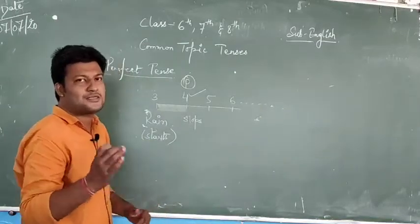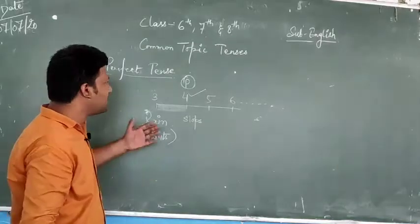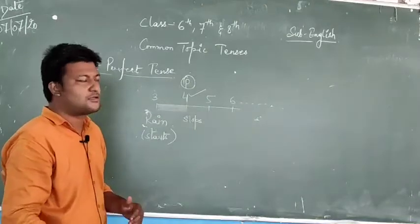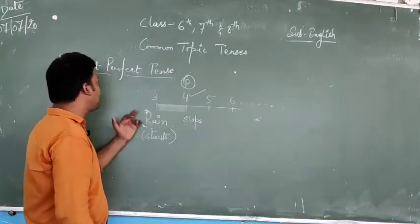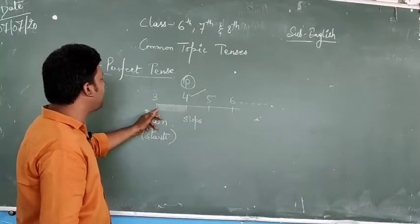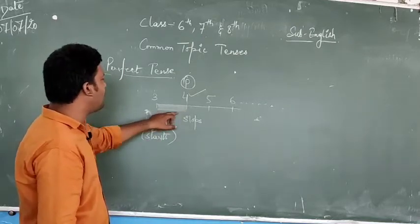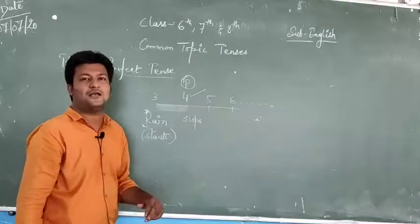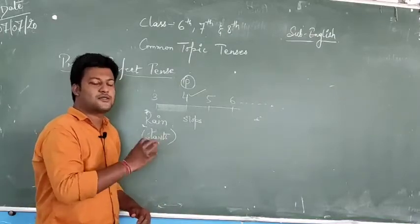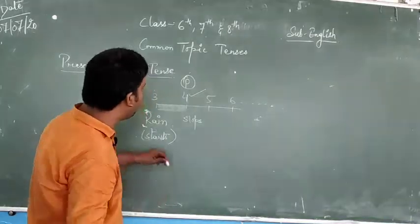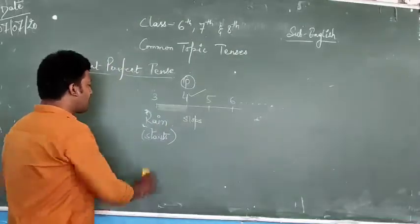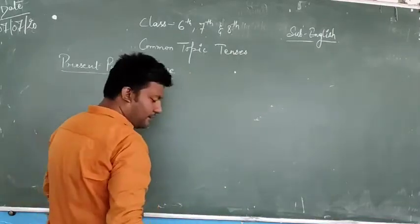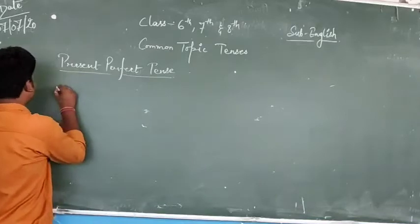What is different about present perfect tense compared to simple and continuous? In simple tense, time duration is not there. In continuous tense, time duration is also not there. But in perfect tense, there is a time duration — from 3 o'clock to 4 o'clock, a period of one hour. This duration is what distinguishes perfect tense from simple and continuous. So this is what we call perfect tense. Now I am going to quickly write the formulas so that you can learn and write them.